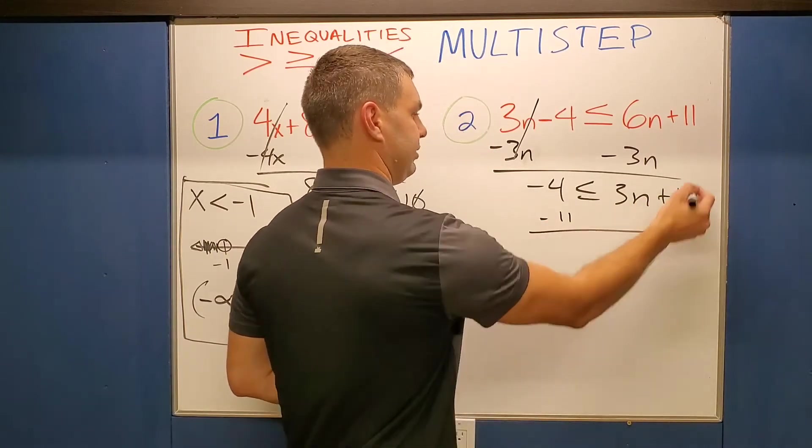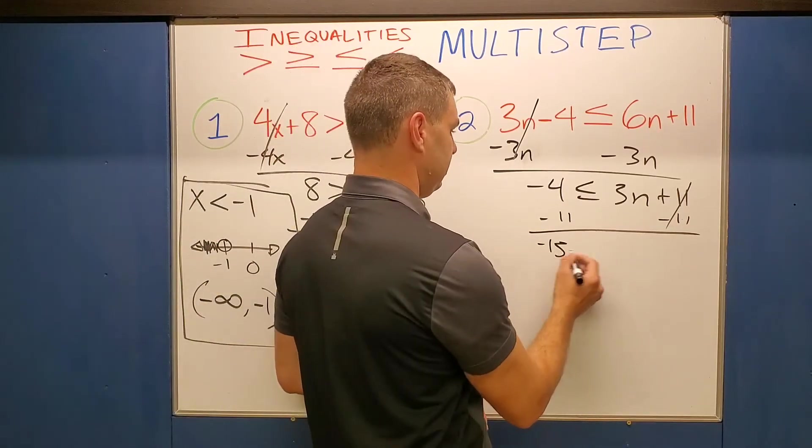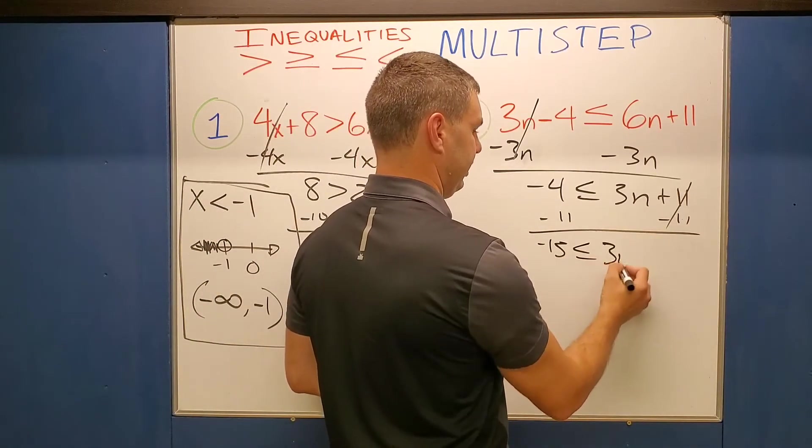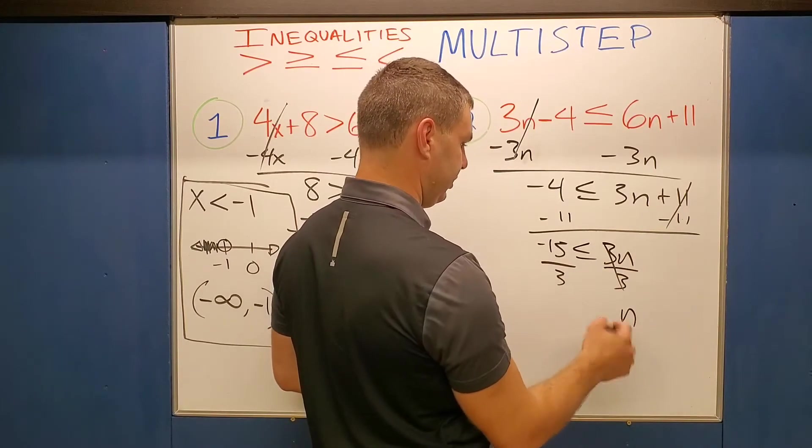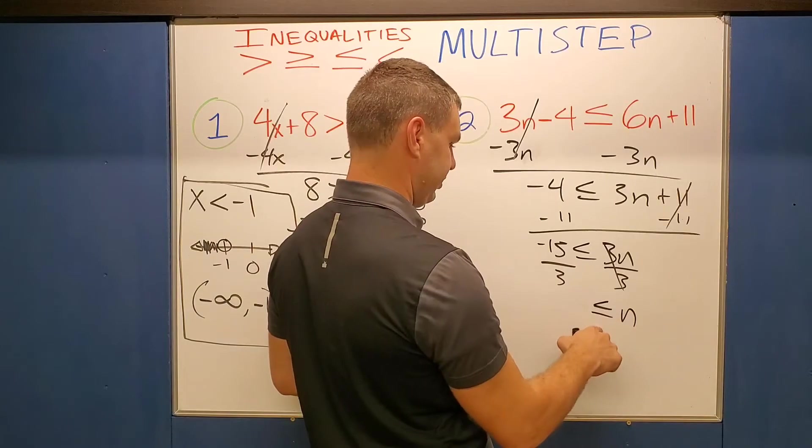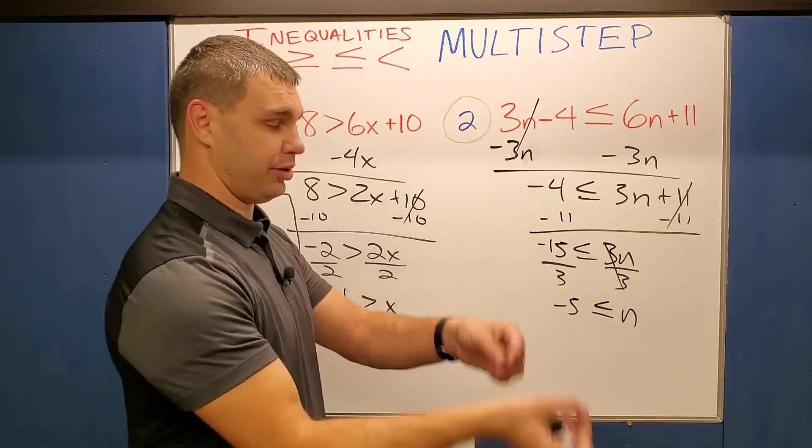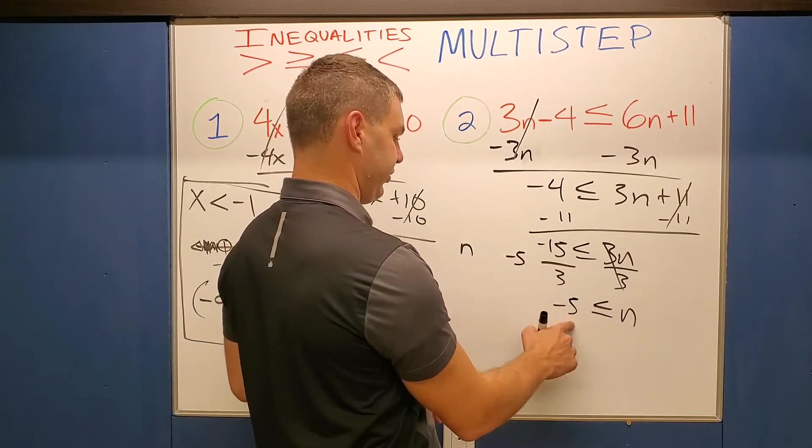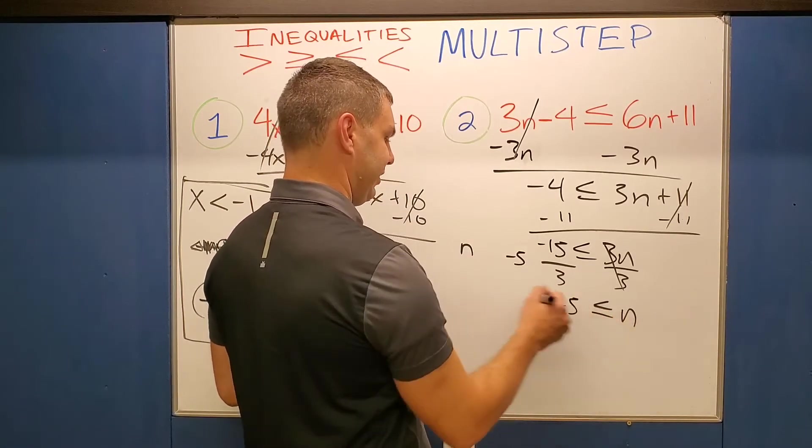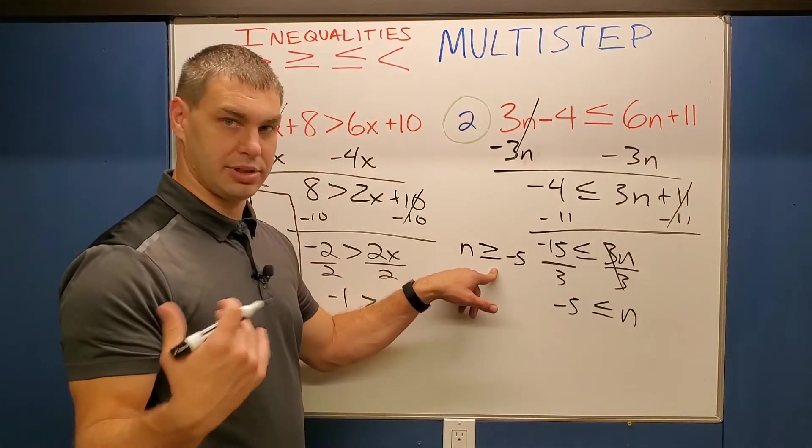Subtract 11 on both sides. Let's see. Negative 4 minus 11 is negative 15. Is less than or equal to 3n. Divide by 3. And we get n over here. We have a less than or equal to sign and then negative 5. So same idea. The n is written second. We're going to write it first. So we can bring that out to the front. Put the negative 5 over here. It's pointed this time at the negative 5. So that's going to stay pointed at the negative 5 like that for our solution.